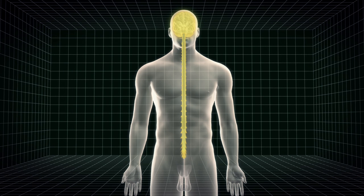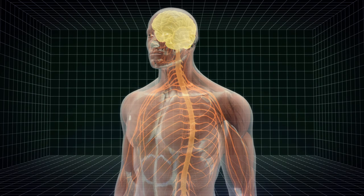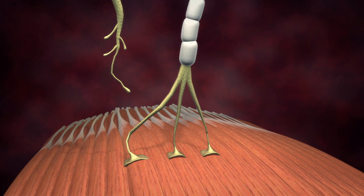Motor neurons control voluntary muscle movement. Upper motor neurons in the brain run down the brainstem and spinal cord where they connect with lower motor neurons.